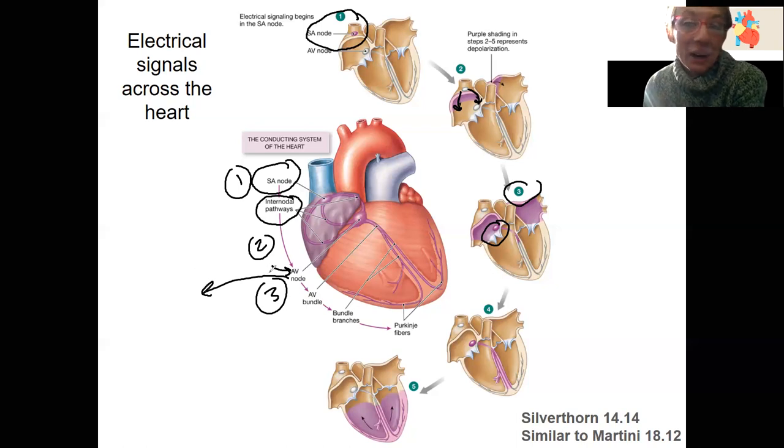The important part of the AV node right now is that there is actually a delay here because we're kind of converging on all onto this one node. That causes a delay. That's important because coupled to this excitation is contraction. This delay allows the atria to contract before the ventricles. So while the atria is contracting, this signal continues down, but it has not reached the ventricles yet. So atria contract before the ventricles because of this delay.